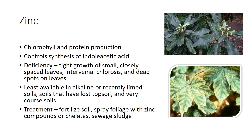Low zinc levels are widespread in many crops, including beans, corn, rice, and pecan on alkaline soils. The symptoms of zinc deficiency in plants are quite varied, but include tight growth of small, closely spaced leaves, interveinal chlorosis, and dead spots on leaves. Zinc is most available in acid soil, least available in alkaline or recently limed soils.